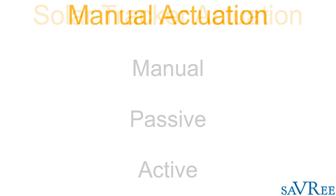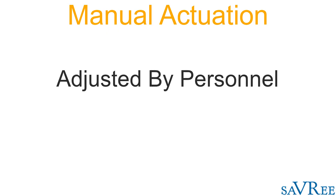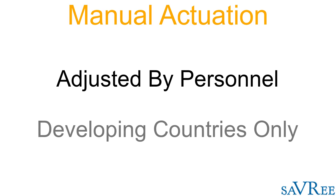The manual method relies upon personnel going around and gradually adjusting the solar tracker throughout the day in order that it can follow the path of the sun as it rises and falls and travels from east to west. This is obviously not ideal if manual labor is quite costly. So this type of tracker is only ever used in developing countries where the hourly rate you pay the personnel is quite low. In a developed country, it simply would not be economically viable to use a manually actuated type of solar tracker.